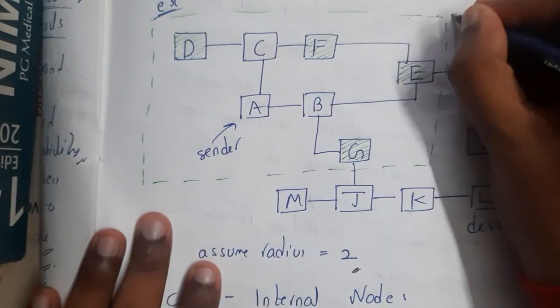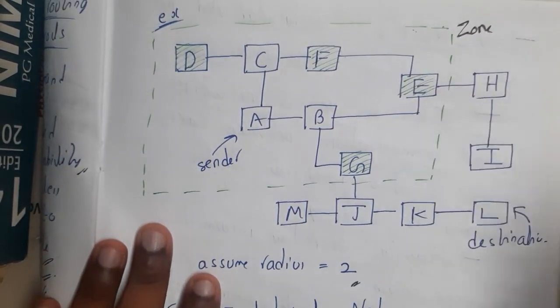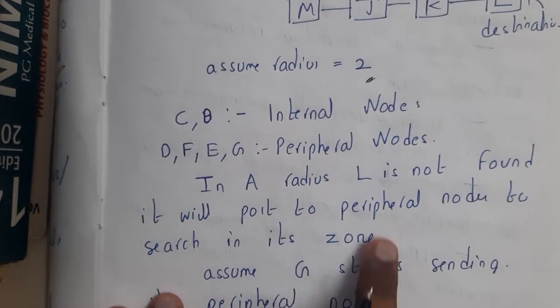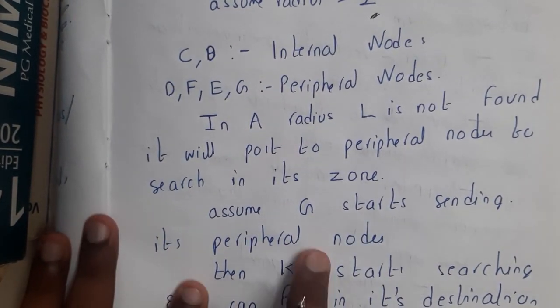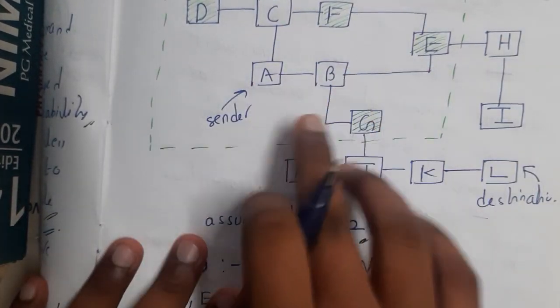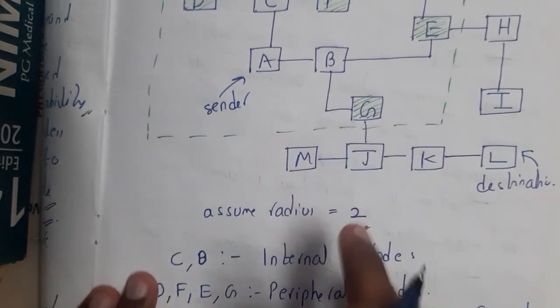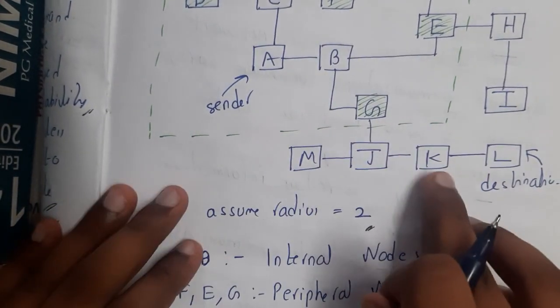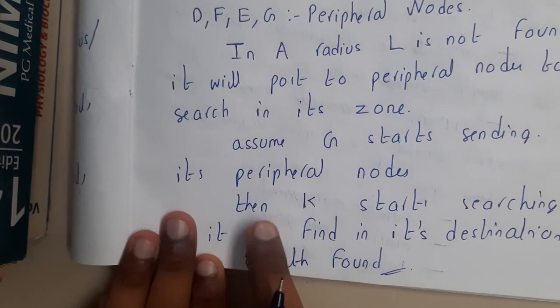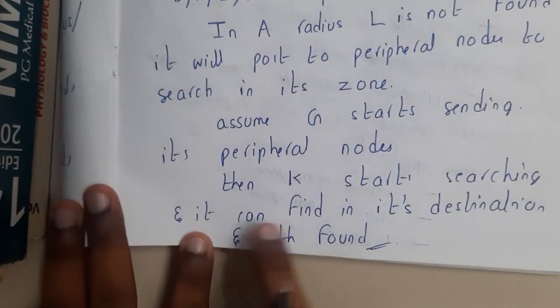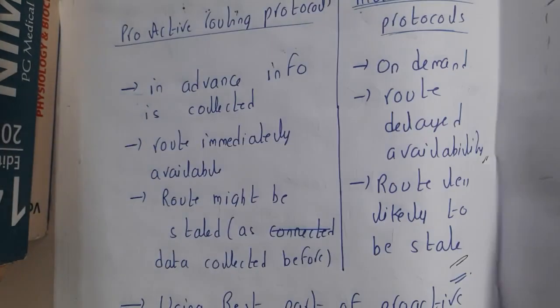To summarize the theory: L is not found in A's zone, so A forwards the request to peripheral node G. G searches its zone but finds only up to K, not L. G then asks K to search, and K finds L. The path is established and data is sent. This is the zone-based hybrid approach.